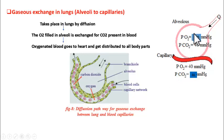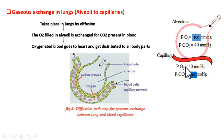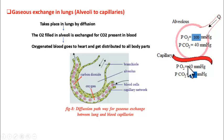Looking at the numbers for understanding: inside the alveolus during inhalation, the pressure of oxygen is 100 mmHg and carbon dioxide is 40 mmHg. Inside the capillary, oxygen pressure is 40 mmHg and carbon dioxide is 46 mmHg. So oxygen moves from alveolus to capillary, and carbon dioxide moves from capillary to alveolus — driven by the pressure difference in the diffusion process.